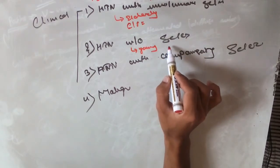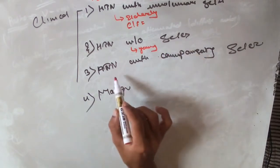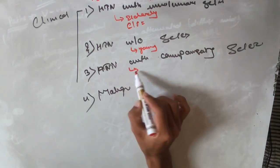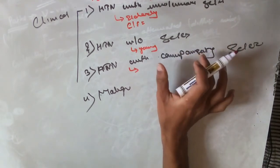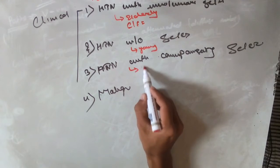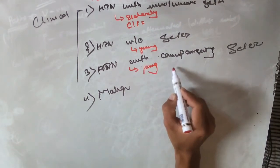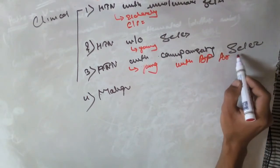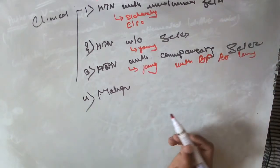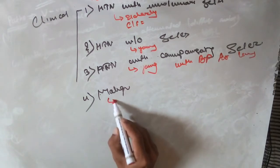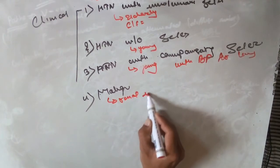Compensatory sclerosis is seen in young patients with prolonged benign hypertension who have been exposed to increased BP over a long duration. Malignant hypertension represents a severe state and is usually associated with renal insufficiency.